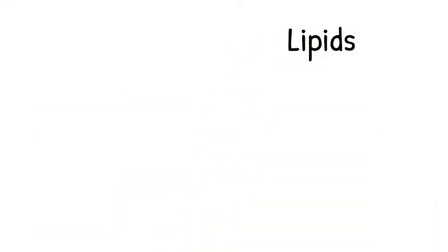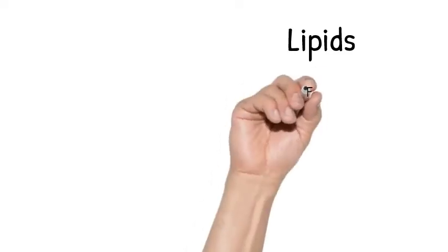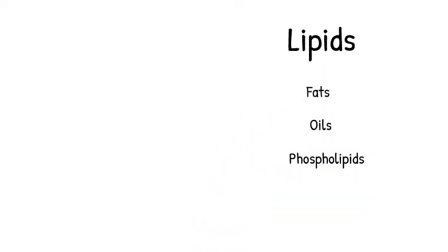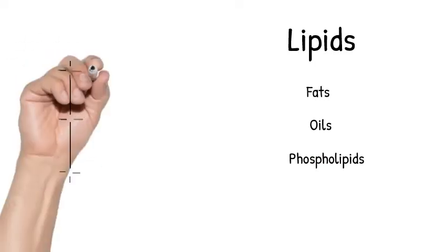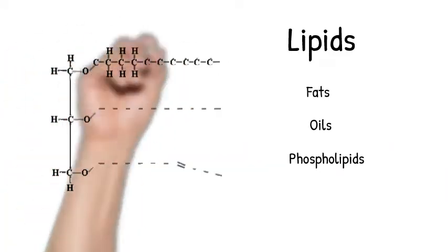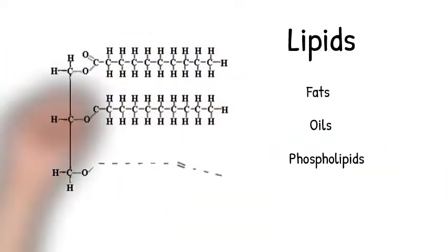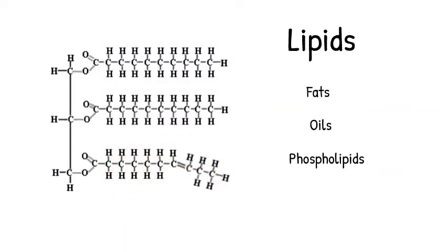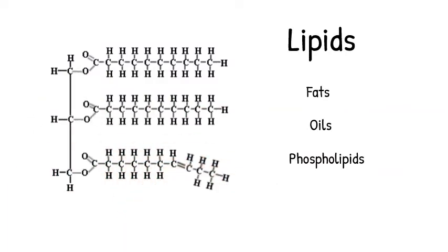Lipids are also made up of the elements carbon, hydrogen, and oxygen, although they are configured quite differently than carbohydrates. Lipids include fats, oils, and phospholipids. Note that the phospholipids also include the element phosphorus. Like carbohydrates, lipids are used for multiple functions in our bodies and can also be used as a fuel source. Lipids supply nine calories per gram, more than twice the amount of calories carbohydrates supply.